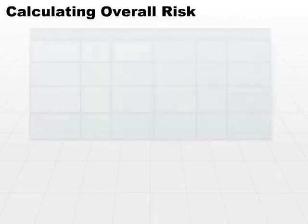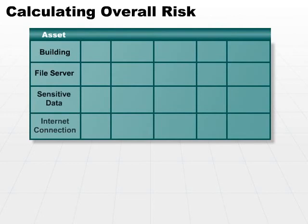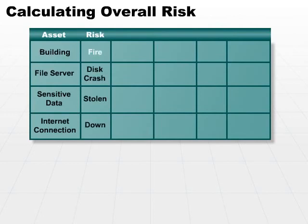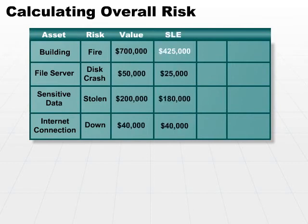Let's put it all together. In this example, we have several different assets. We have a building, and the risk is fire. In this case, we've decided that our building is worth $700,000, and if we have a fire in the building, we're expected to lose $425,000.